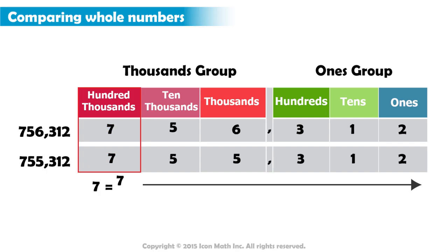Since they are equal, we move on to the next highest place value. Again, we have 5 in the ten thousands place in both numbers.